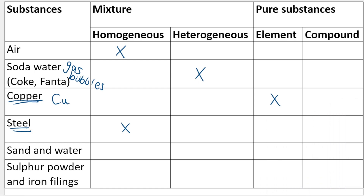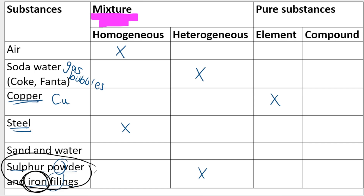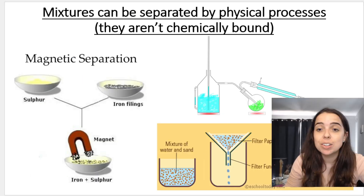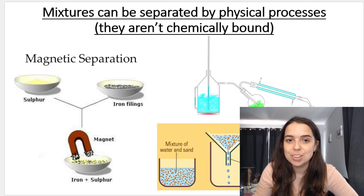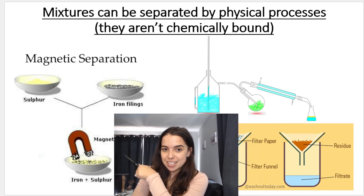Sulfur powder and iron filings — that is a heterogeneous mixture because you can see the little iron filings in the powder. And remember, mixtures can be separated using physical methods. How would you separate the iron filings from the sulfur powder? Keep in mind that iron is ferromagnetic — it's magnetic. So what you would do is use magnetism to separate them. Mixtures can be separated by physical processes because they are not chemically bound, just like that.